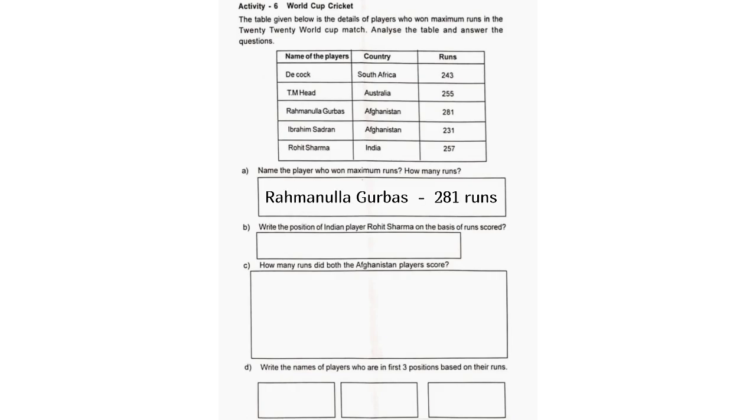A. Name the player who won the maximum runs. How many runs? Rahmanullah Gurbaz with 281 runs.